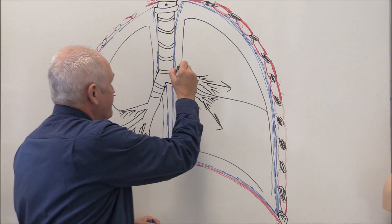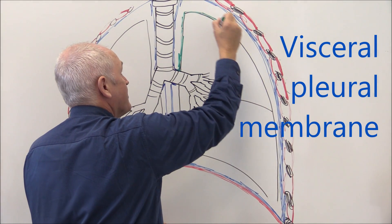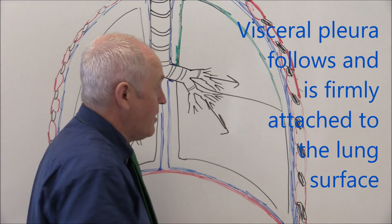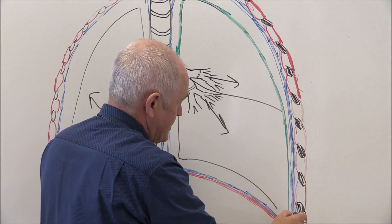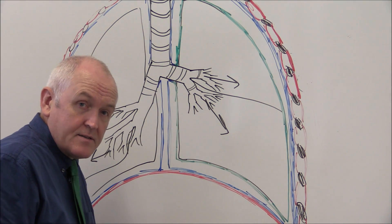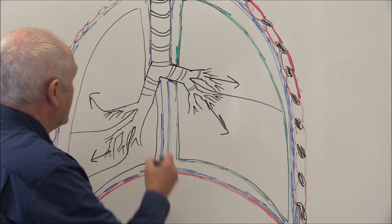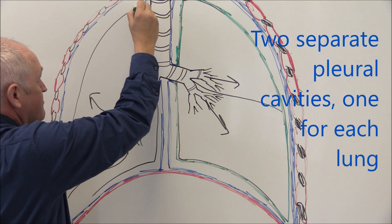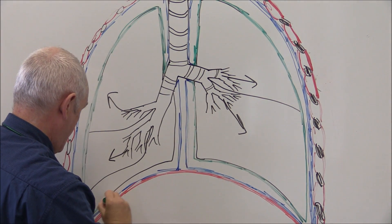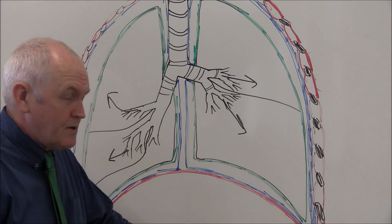This membrane actually reflects back on itself, but we'll call this one a different membrane. The one shown here in green is the visceral pleural membrane. The visceral pleural membrane is lining the surface of the lung, and it's fixed to the surface of the lung — very hard to peel off. So we see the parietal pleural membrane surrounding the inside of the thoracic cavity, and the visceral pleural membrane adhered to the surface of the lung on both sides.